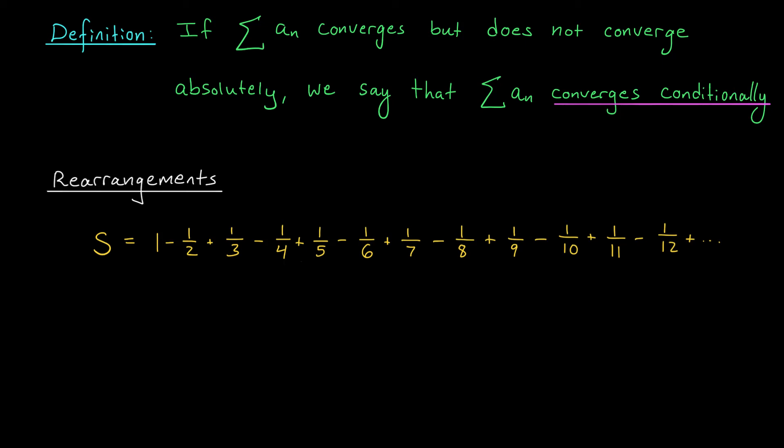When I say rearrangement, I mean taking an infinite series and mixing up the terms — changing the order in which you add things. Why would changing the order of the terms affect the series in any way? Order shouldn't matter when we do addition. If I have an infinite series that converges to some s, then when I mix up the terms, it should still converge to s, right? Prepare to be surprised. Consider this infinite series — the alternating harmonic series. We know it converges thanks to the alternating series test. Maybe the sum is s. In fact, if you know a little bit about Taylor series, you can show that s is ln(2).